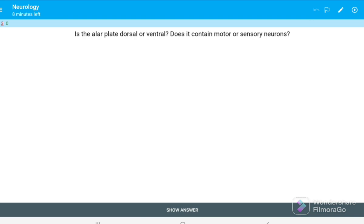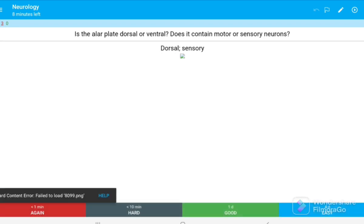Okay. So, the question is, is the alar plate dorsal or ventral? Does it contain motor or sensory neurons? Okay, this confuses me or might confuse you. Okay, let's recall what is alar plate. Is it dorsal or ventral? I think it's ventral and it contains sensory neurons. Let's show me the answer. Yes, it's dorsal and sensory neuron.